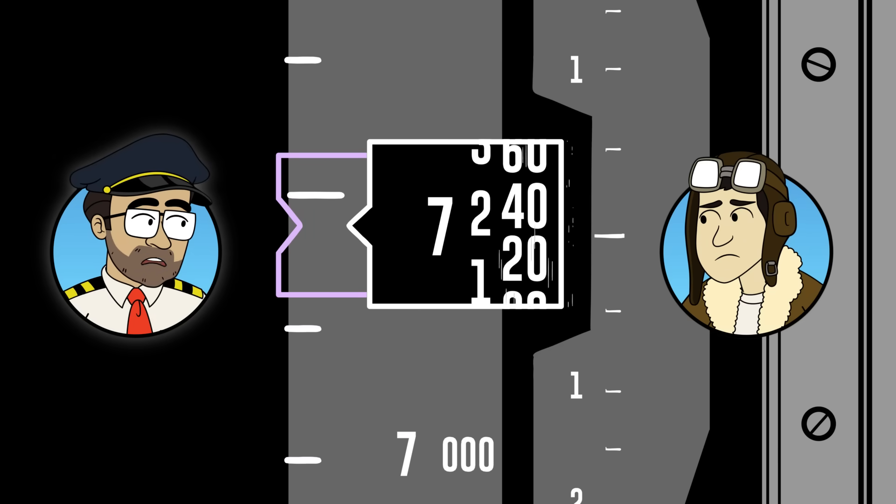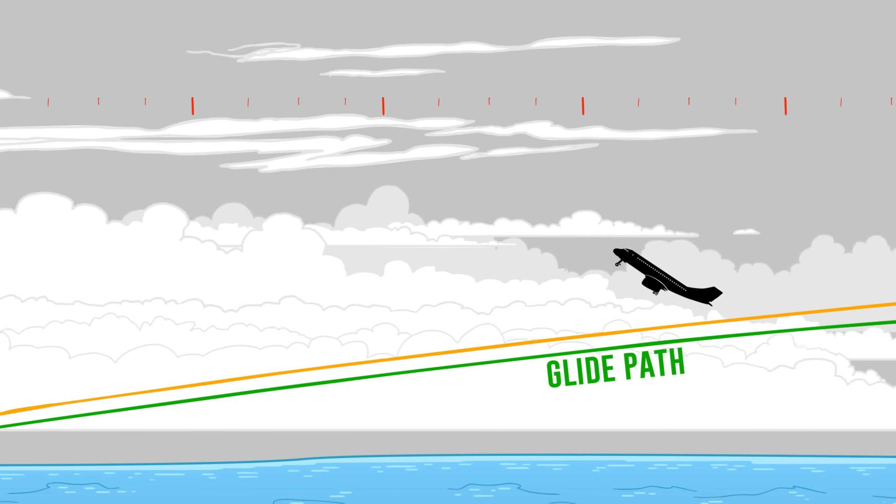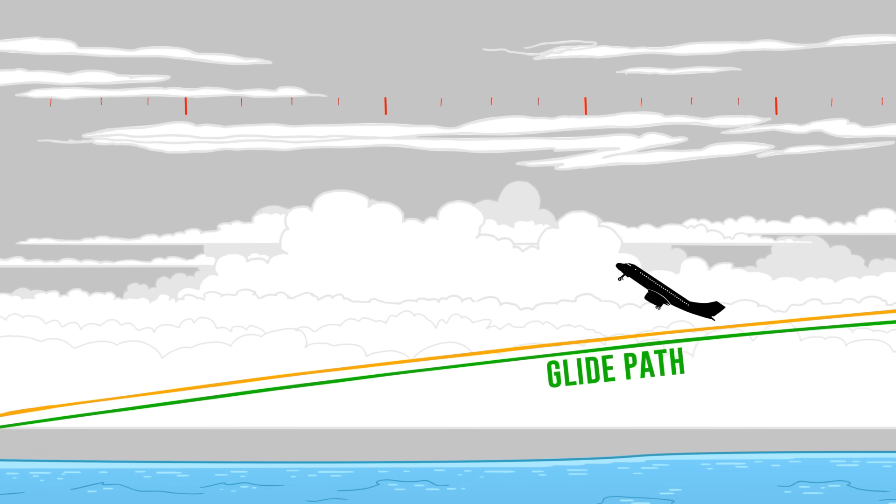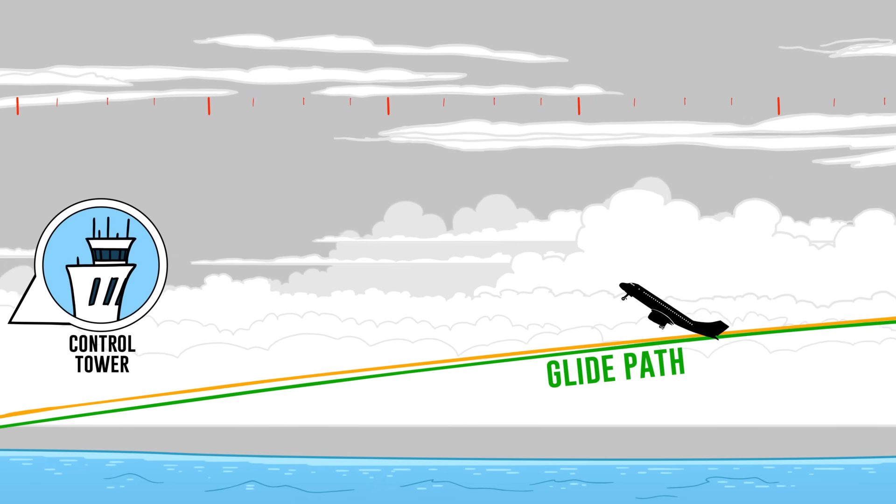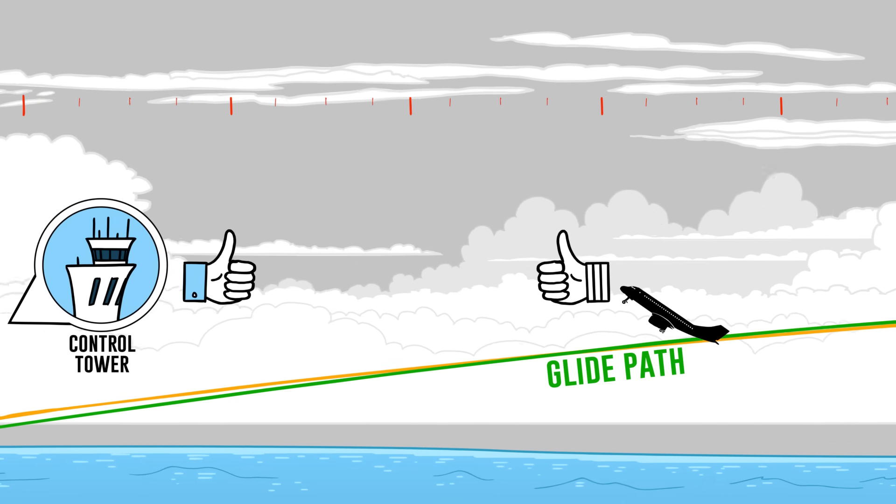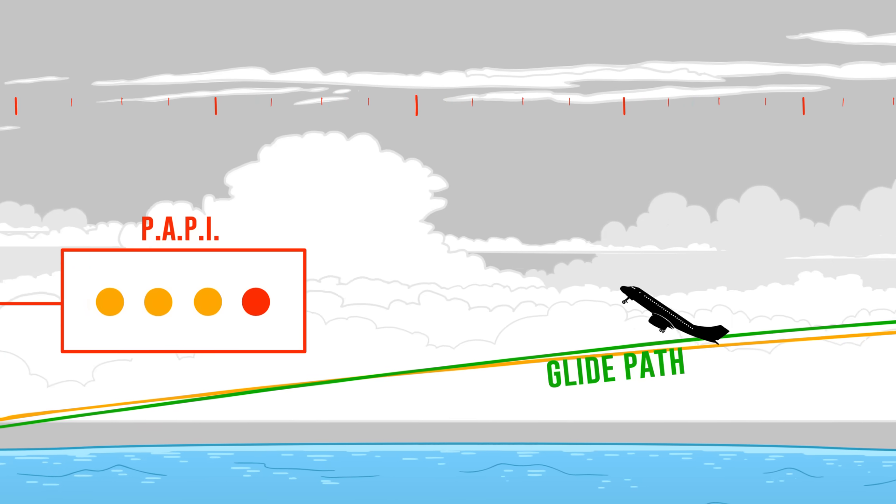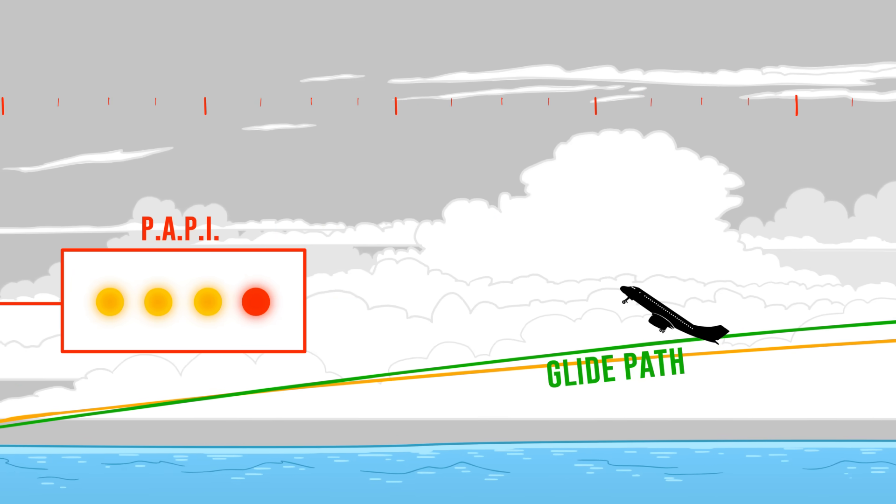So their sink rate's a little high. The descent rate began to decrease. You know, they're making it not quite as bad. And the controller cleared the plane to land. They acknowledged this. And the PAPI lights at this point are three white and one red. So a little high.